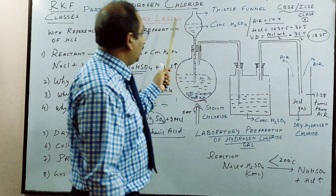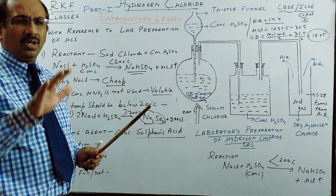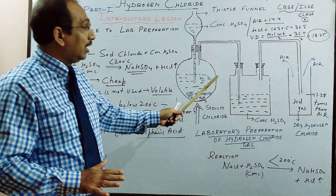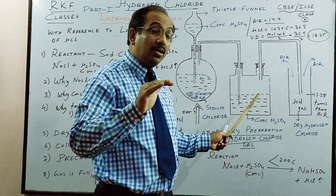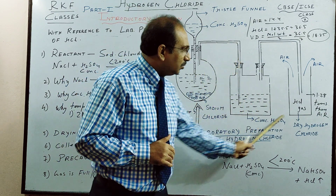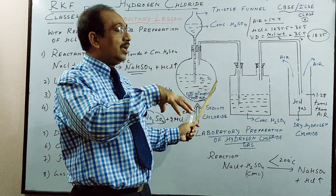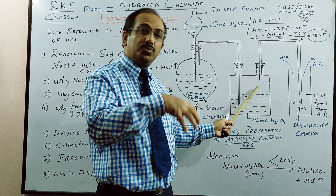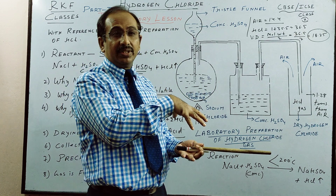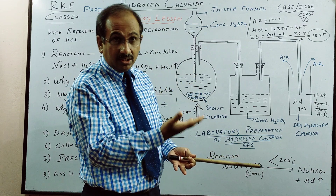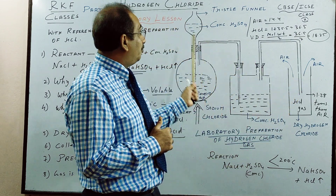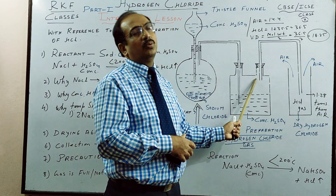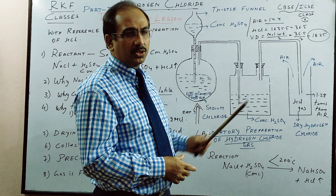If you want to prepare hydrochloric acid — not dry HCl gas — you don't use the drying stage. Instead, we use an inverted funnel arrangement: a funnel is placed over water so that hydrogen chloride gas is absorbed in water. The funnel increases the surface area and absorption is better. This prevents back suction. Lab preparation of hydrochloric acid uses this funnel arrangement, and we collect the acid by absorbing the gas in water.